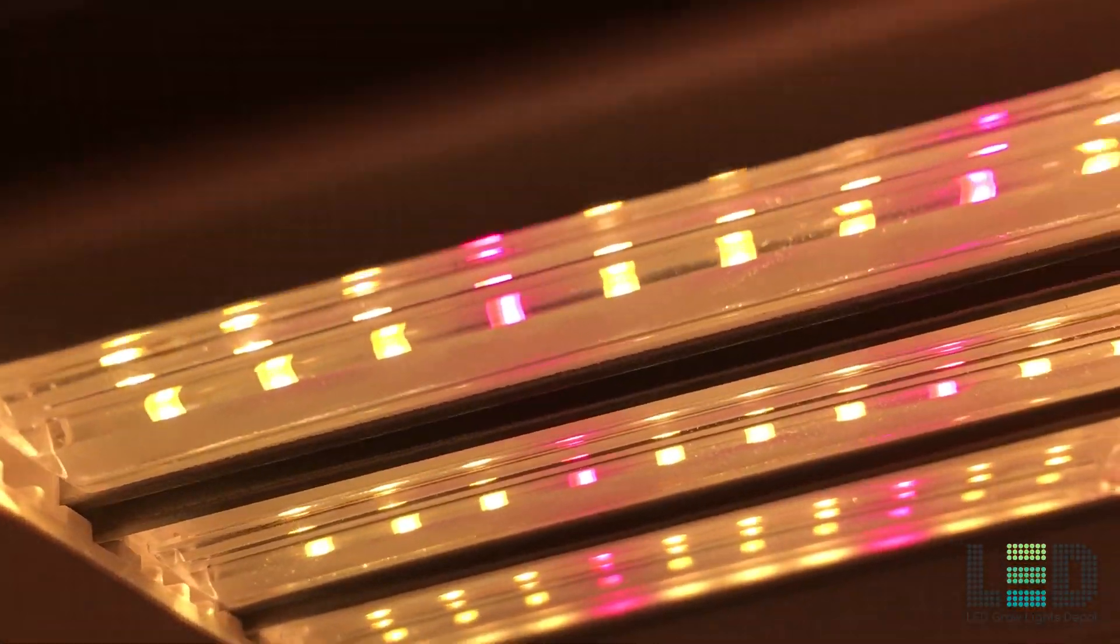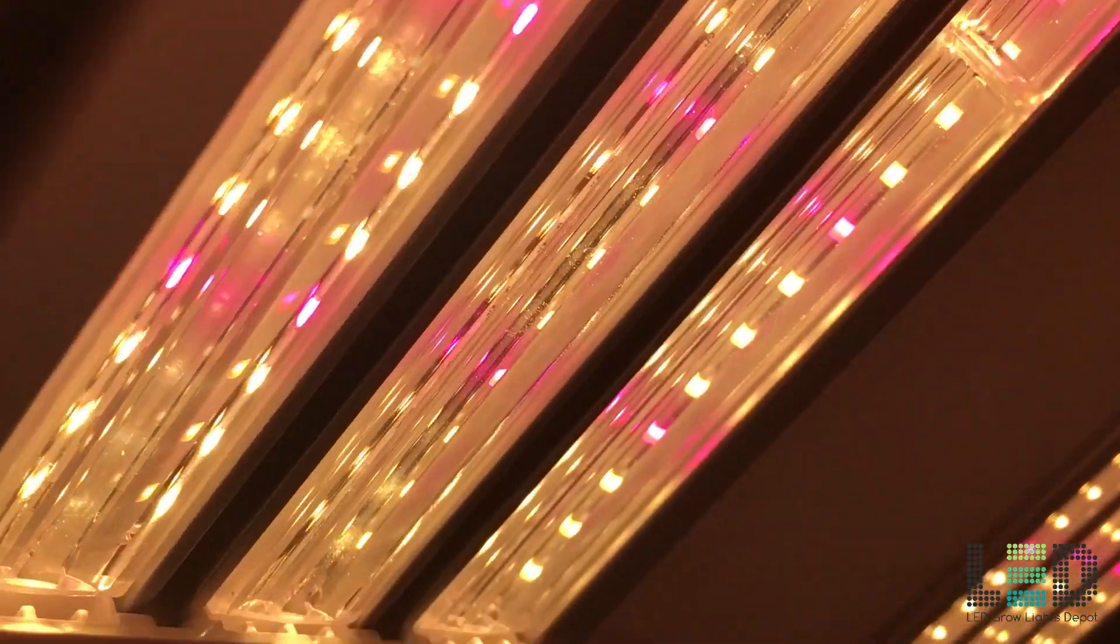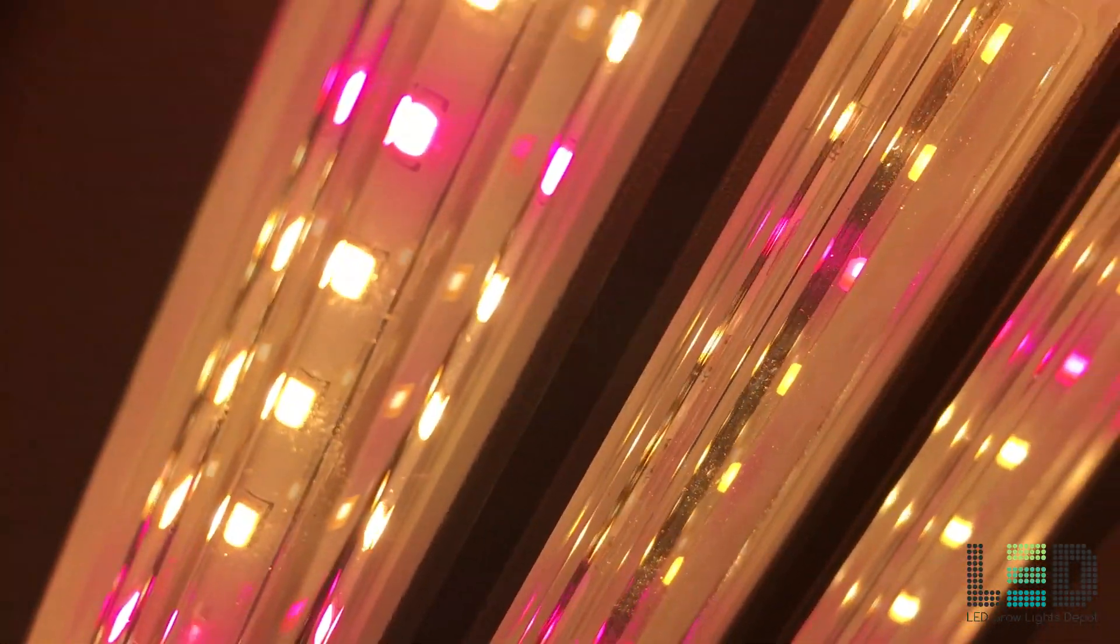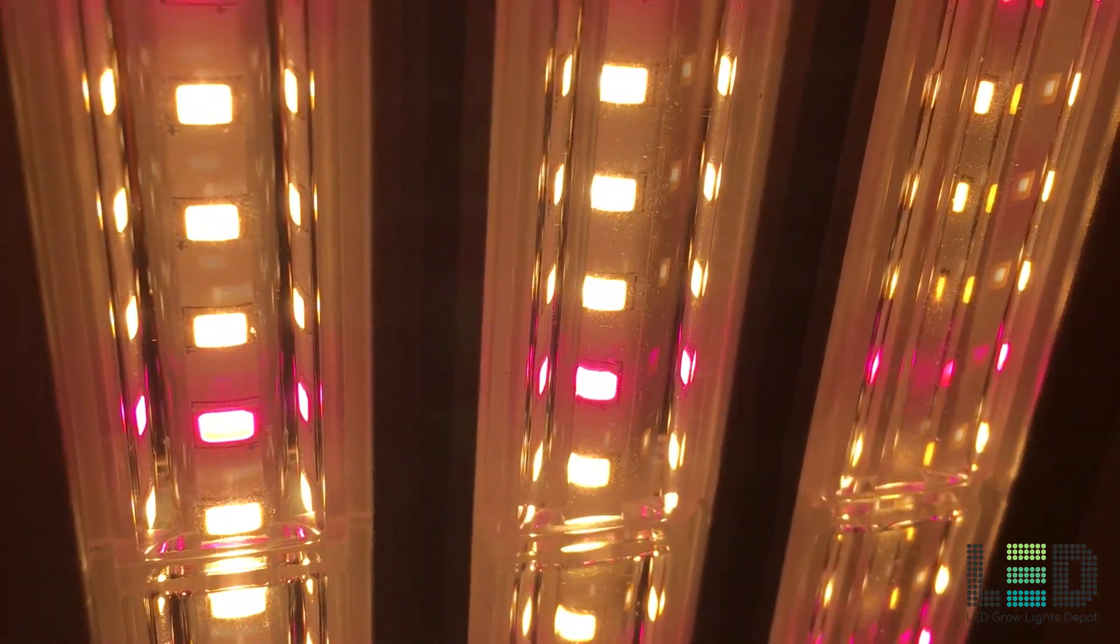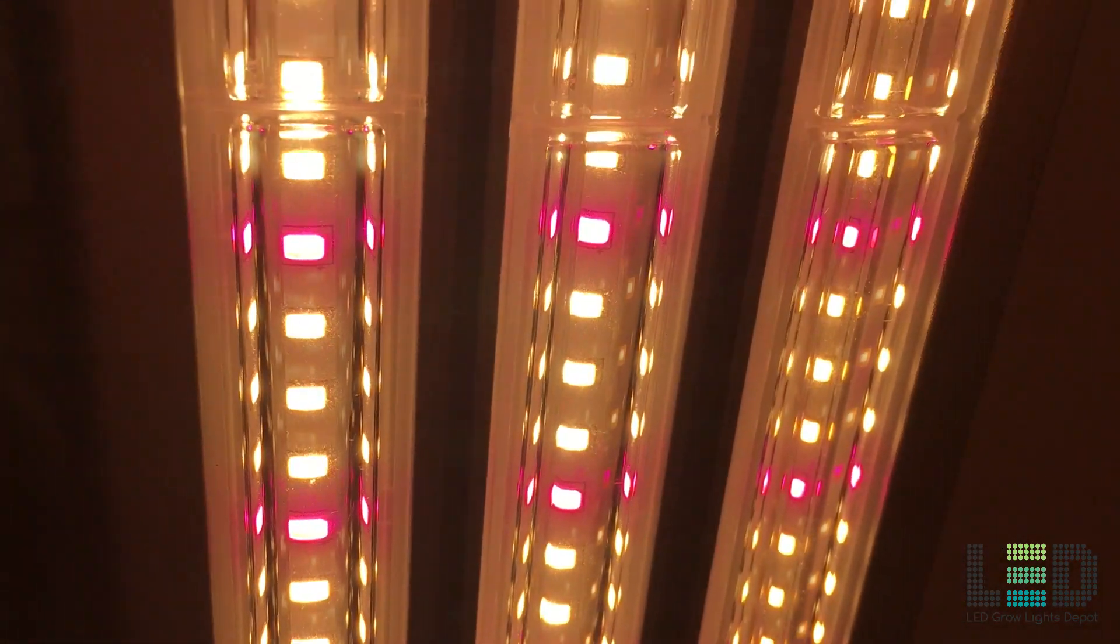The ES180 comes with a 10 foot cord and is ready to plug and play out of the box after you hang it up. There are multiple ways to hang up the fixture, and it can even be angled towards the plants, just like the first generation fixture.